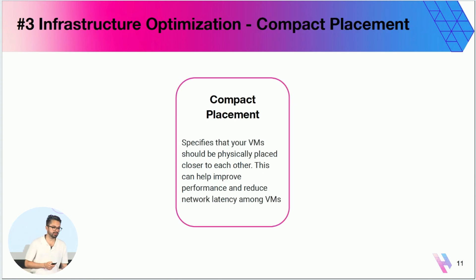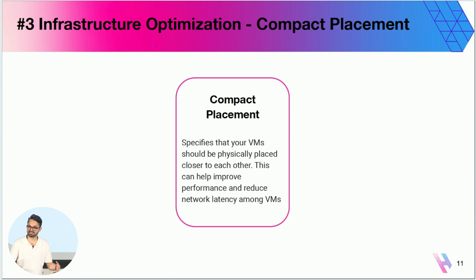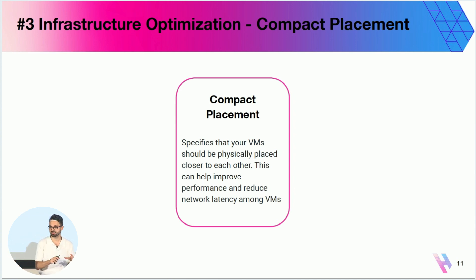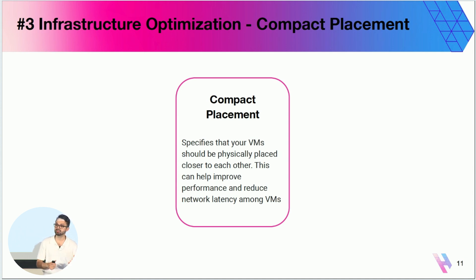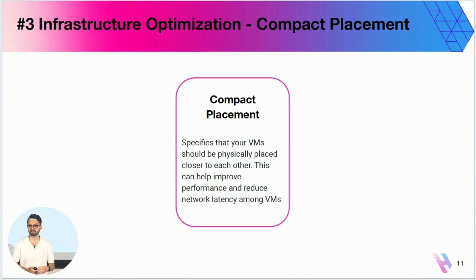The third infrastructure optimization is compact placement. Compact placement essentially means you position your VMs closer to each other — physically putting your VMs closer to a common geographic location will reduce network latency among the VMs, and this will also help speed up your training process.